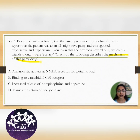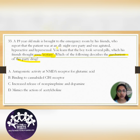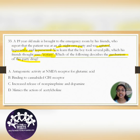The question talks about a party drug. A boy took several pills which his friends thought were ecstasy. The features of this party drug included an all-night rave party, and the male was agitated, hyperactive, and hypersexual. Hyperactivity and agitation are features of amphetamines, and they have asked us the mechanism of action of this party drug.